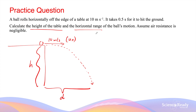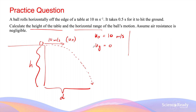We know that the initial horizontal velocity is 10 meters per second. The initial vertical velocity is 0 — this is always the case when any object or mass travels horizontally at the beginning of its projectile motion. We can start by using the time of flight and the initial vertical velocity to find the vertical displacement of the entire motion.